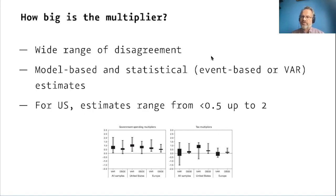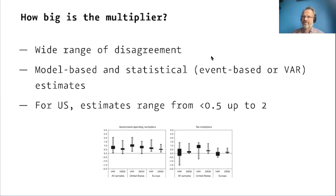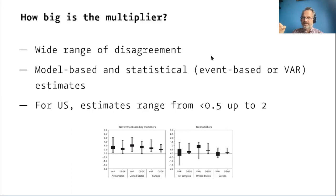The other method is VAR — vector autoregression — studies, where you get long time series data on variables of interest and look for systematic patterns where certain things change after other things. You take all variables at time T and regress them on their values at time T-1 and so on, and see what patterns emerge. Both narrative and VAR approaches are potentially informative, just in different ways: one identifies specific exogenous fiscal changes, the other finds patterns in large datasets.